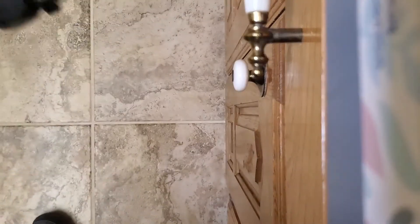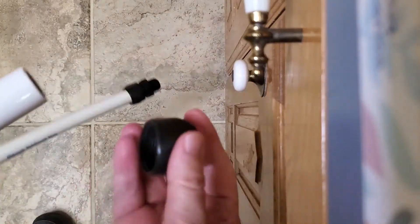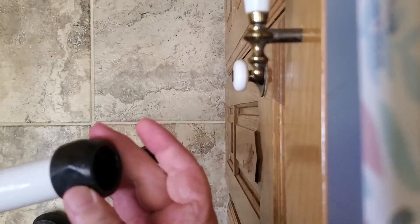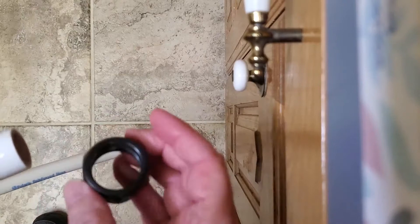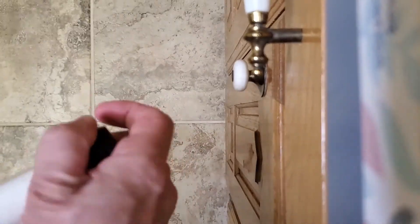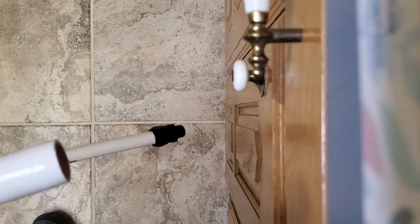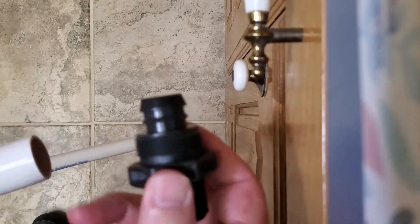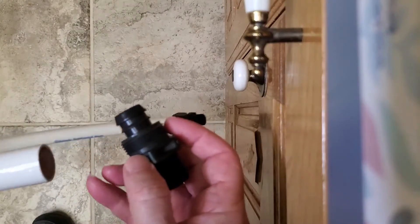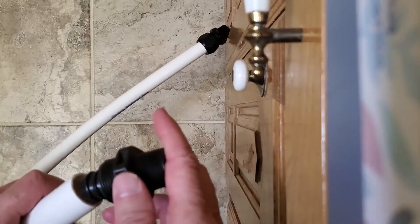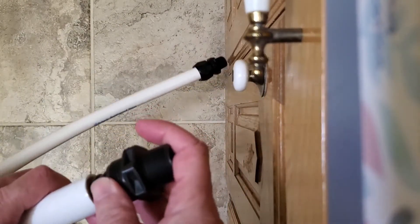So first of all, we've got to take this collar and make sure I've got the right direction here and slide it on the hose. Then we take the connector and this ribbed end of the connector has to go inside this tube, and it is really tight.